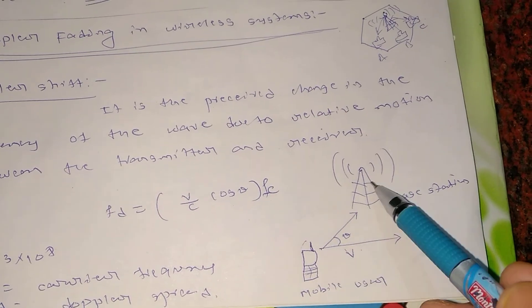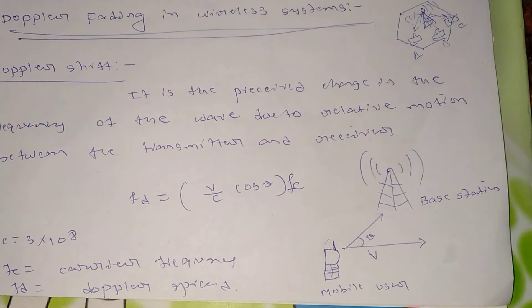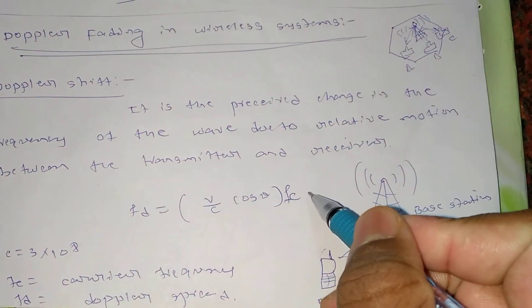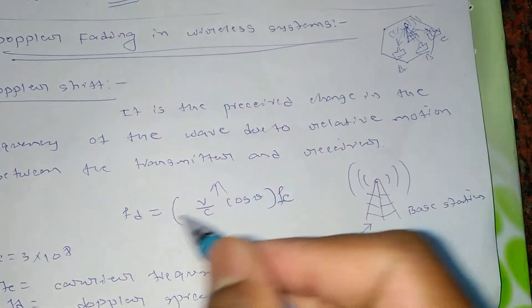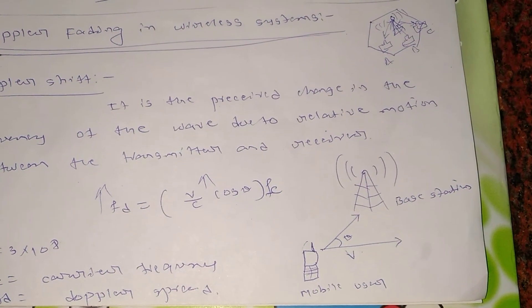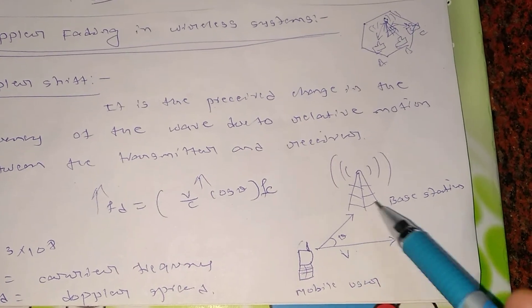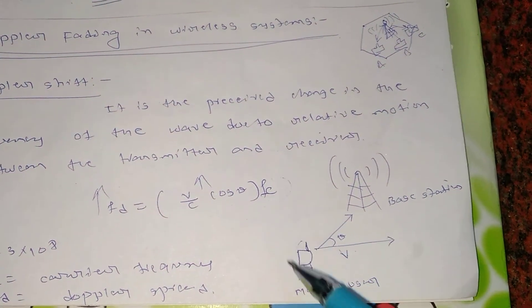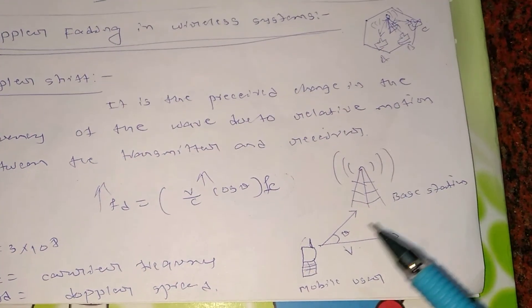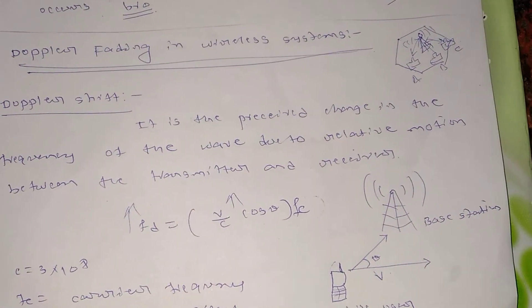As the speed increases, the Doppler spread will also increase because they are directly proportional. As the velocity increases, the shift in the frequency or change of this frequency will increase. That's the meaning of Doppler shift. I hope you liked this video and found it useful.